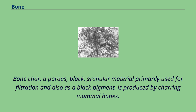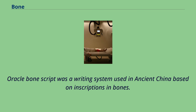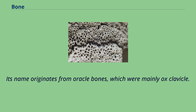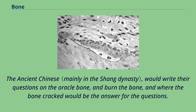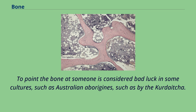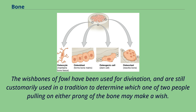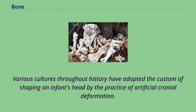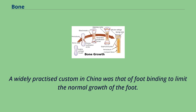Oracle Bone Script was a writing system used in ancient China based on inscriptions in bones, mainly ox clavicle. The ancient Chinese would write their questions on the oracle bone, burn the bone, and where the bone cracked would be the answer to the questions. To point the bone at someone is considered bad luck in some cultures, such as Australian aborigines, such as by the Kurdacha. The wishbones of fowl have been used for divination, and are still customarily used in a tradition to determine which of two people pulling on either prong may make a wish. Various cultures throughout history have adopted the custom of shaping an infant's head by the practice of artificial cranial deformation. A widely practiced custom in China was that of foot binding to limit the normal growth of the foot.